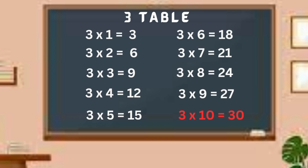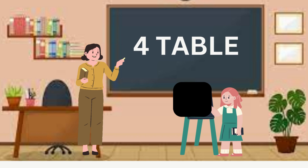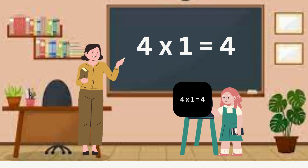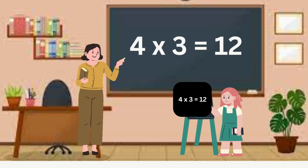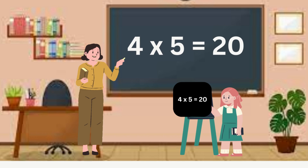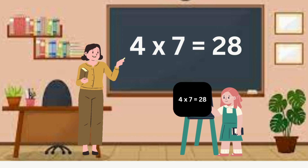Four. Four twos are eight. Four ones are four. Four twos are eight. Four threes are twelve. Four fours are sixteen. Four fives are twenty. Four sixes are twenty-four. Four sevens are twenty-eight. Four eights are thirty-two.